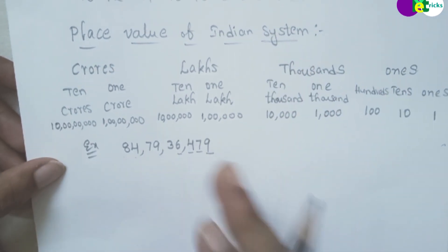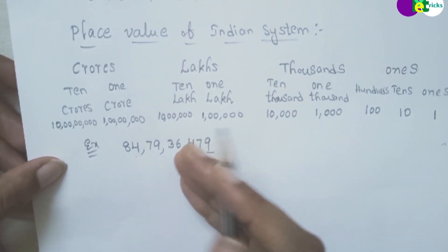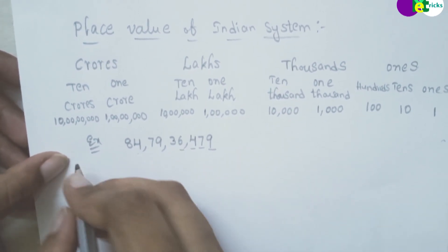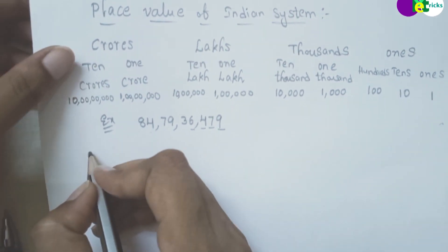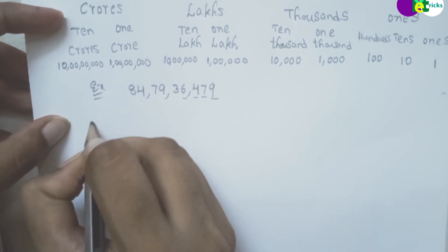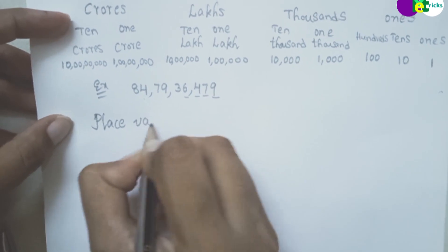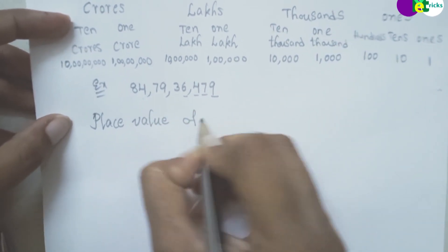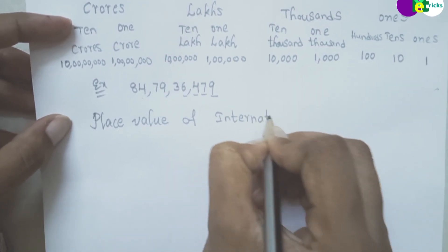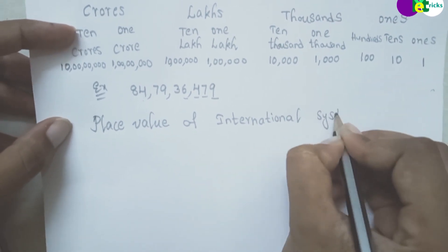This is the number chart for the Indian system. Now let's move on to the International system — the place value of the International system.